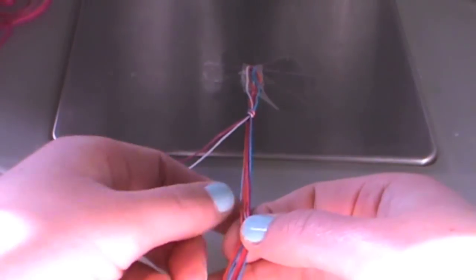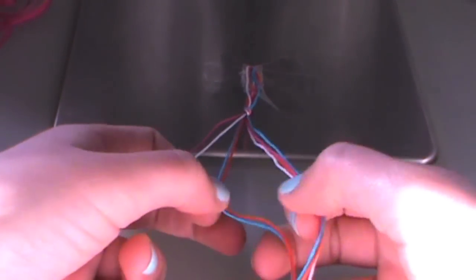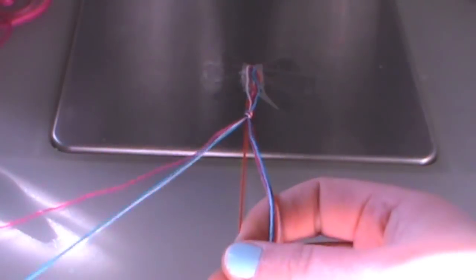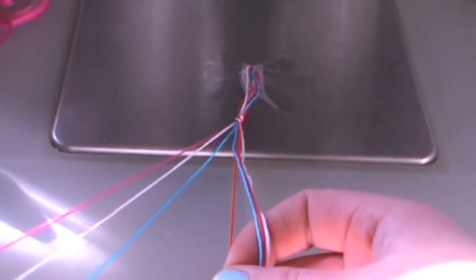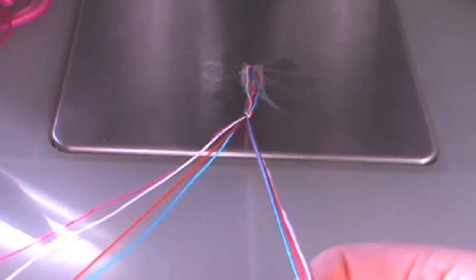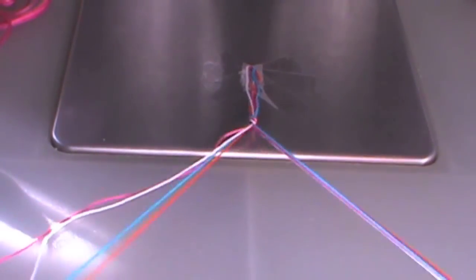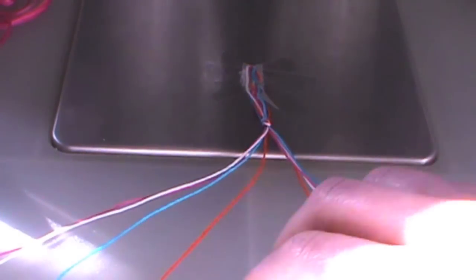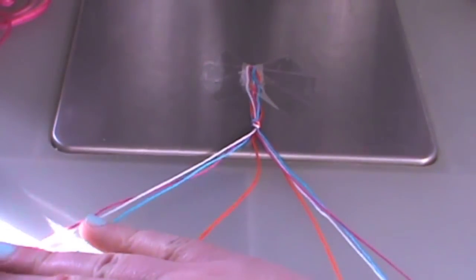Now we are going to spread out our embroidery floss. I am going to spread it out as follows: pink, white, blue, orange, orange, blue, white, pink. You have to make sure that your left side and your right side matches.